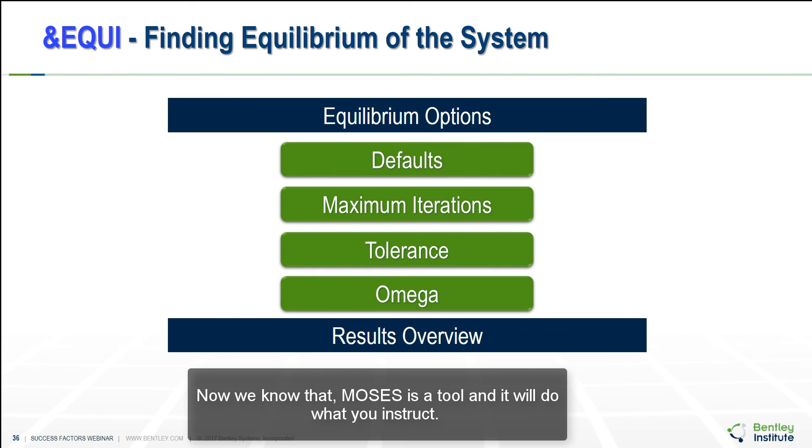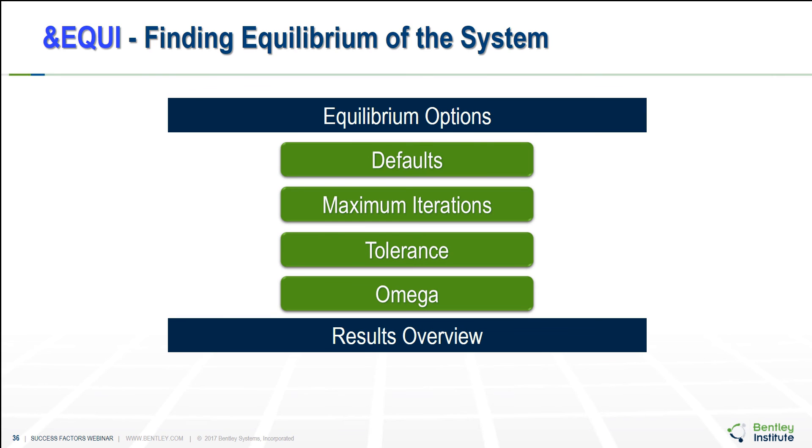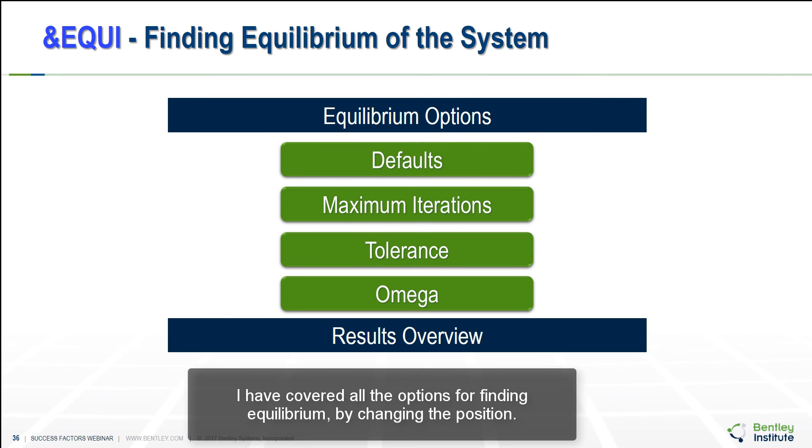Now we know that MOSES is a tool and it will do what you instruct. So if we ask MOSES to accept a large tolerance this resulted in a very bad equilibrium report. So we could change the input needs until we find what we want. I've covered all the options for finding equilibrium by changing the position. Thank you.